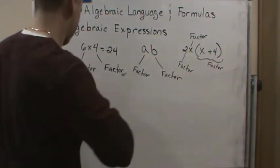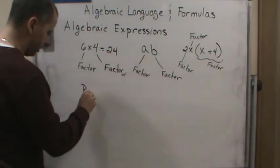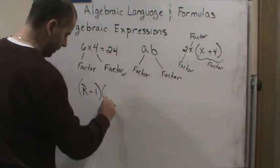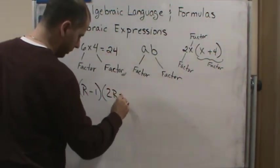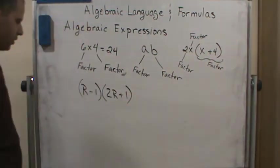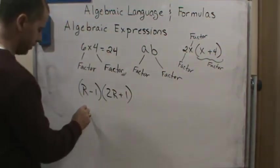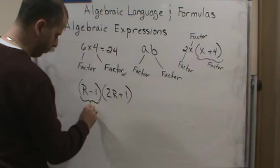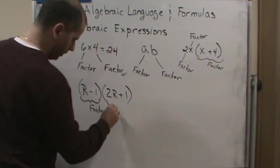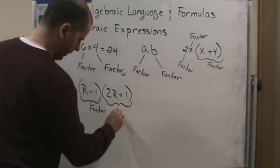And then what else do we have? We have, oh, here's another one. Now, we have r minus 1, 2r plus 1. And so in this case, we've got two factors. So this would be one factor. And then this one would be another factor.